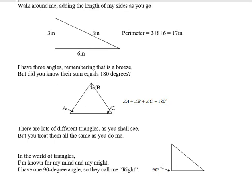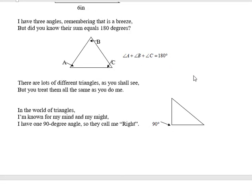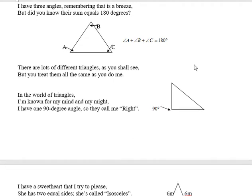I have three angles, remembering that is a breeze, but did you know their sum equals 180 degrees? There are lots of different triangles as you shall see, but you treat them all the same as you do me. In the world of triangles, I'm known for my mind and my might. I have one 90-degree angle, so they call me right.